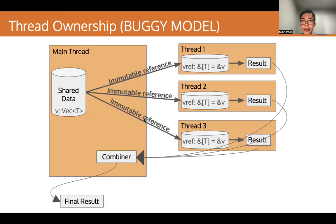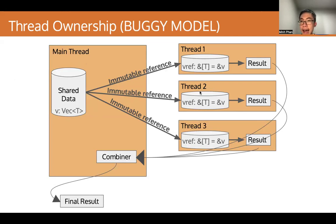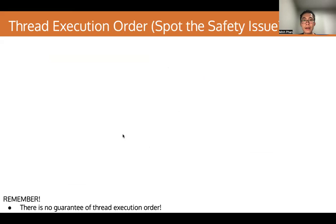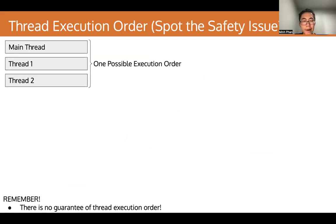So why exactly do we need this? Let's look at an ownership model of the MapReduce pattern. In the main thread we have some shared data — in this case, a variable v that is a vector of some type T. We create three threads to perform our work, and for each of these threads we give them a slice, which is an immutable reference to the variable v in the main thread. These three threads perform some calculations, and the main thread then combines the results. So why exactly is this model buggy? Well, threads really have no guaranteed execution order — they can execute in any order.